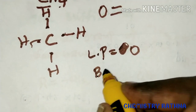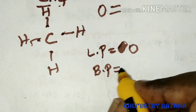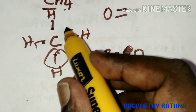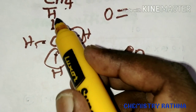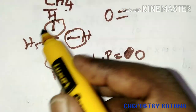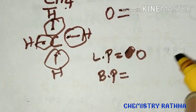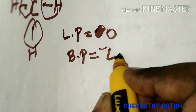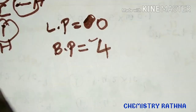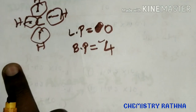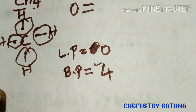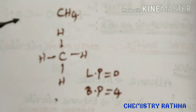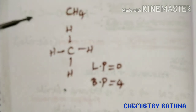All electrons are involved in the bonding. The lone pair is 0. The bond pair is 4.